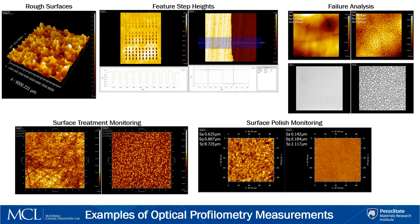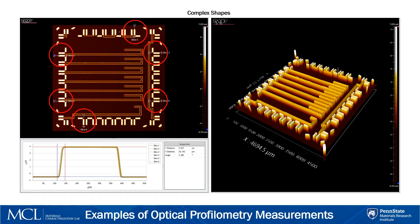SA is the arithmetic roughness, SQ is the root-mean-square roughness, and SC is the peak-to-valley measurement. It's apparent from these parameters that the arithmetic roughness is decreased by more than 400% as a result of polishing. We also have the ability to measure complex shapes, such as this array of contacts and electrodes, which can be useful for device fabrication characterization.